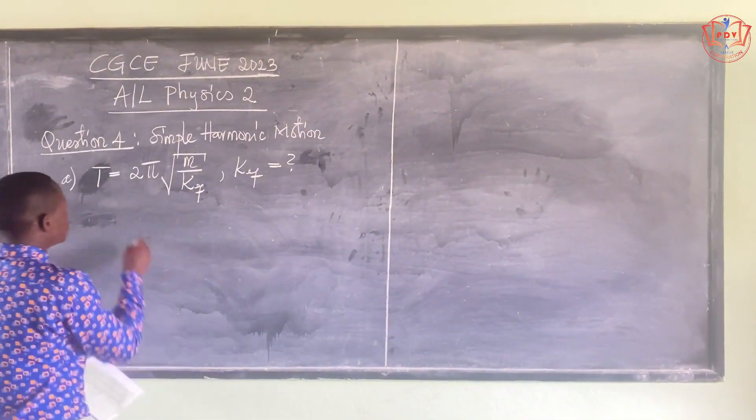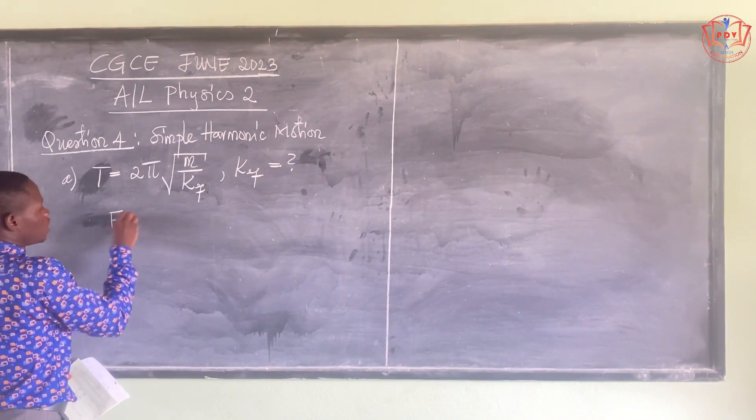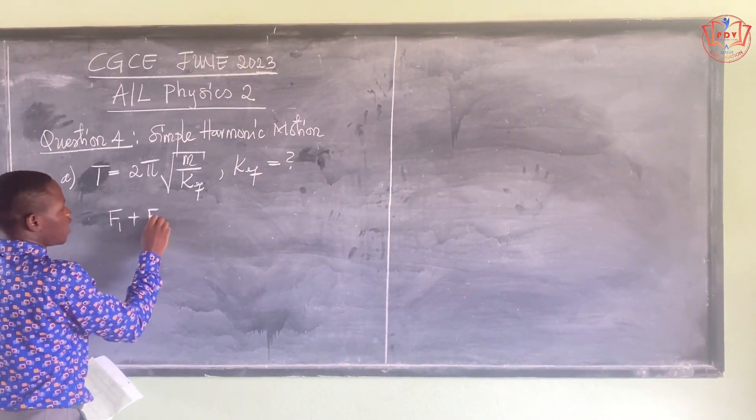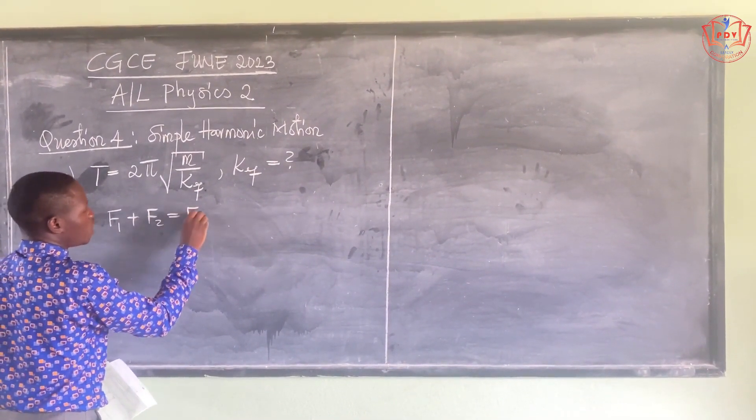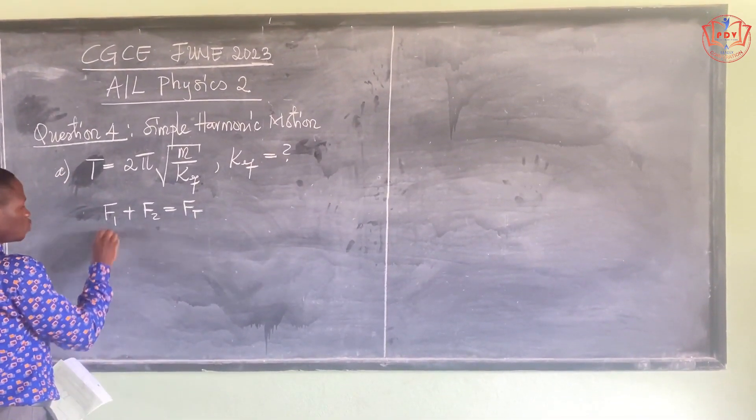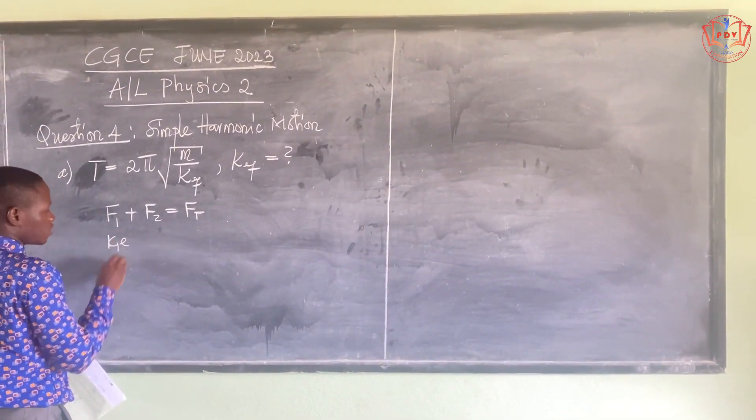And the sum of the forces in them is equal to the overall force. So we have that k1e plus k2e is equal to k_eq times e, where e is the common extension.